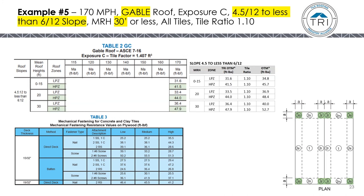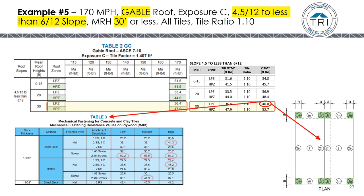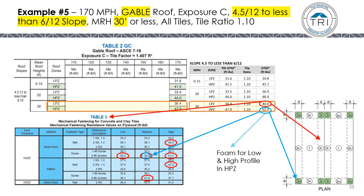Example five at 170 mph: we go to a 4.5:12 to less than 6:12 slope, use Table 2GC, and get our LPZ and HPZ uplift moments. We factor in the tile ratio, look at the LPZ in Table 3, and find the fastening methods that can be used. In the HPZ, again, only medium profile can be mechanically attached; low and high profiles in the HPZs will have to use foam.